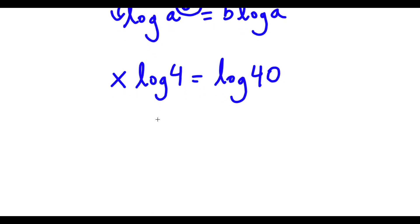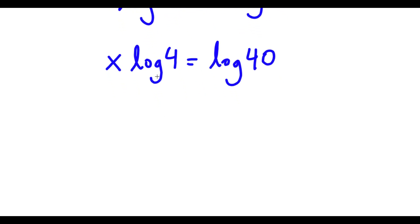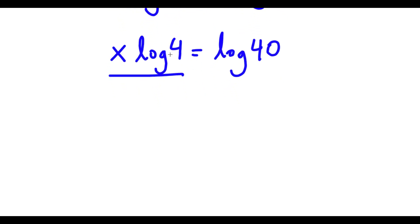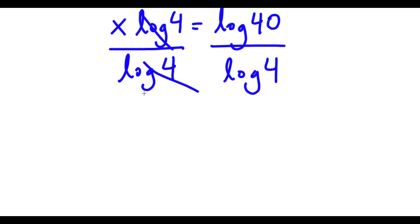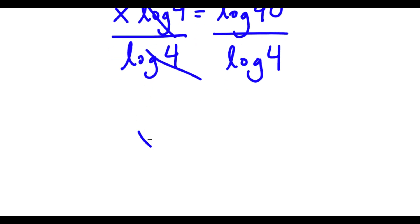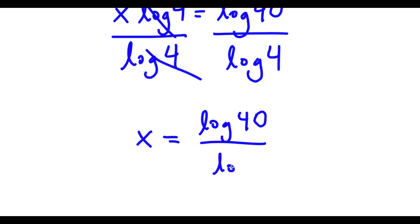Now I'm going to go ahead and divide both sides by log 4. So these two cancel out, and now I have x is equal to log 40 over log 4.